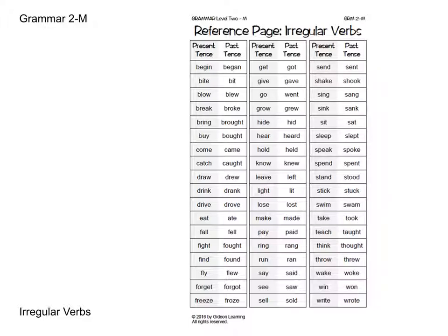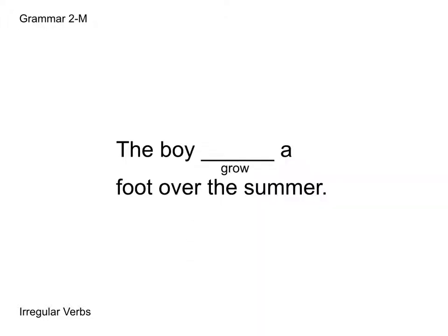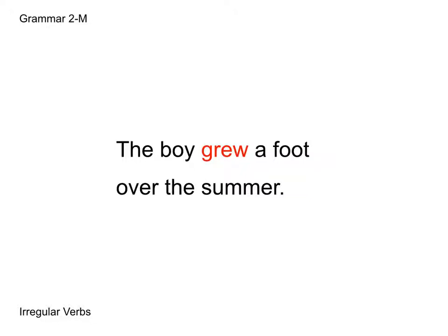Let's look at an example sentence: "The boy blank a foot over the summer." We're going to fill that blank with the past tense of "grow," which is "grew." So the sentence becomes "The boy grew a foot over the summer." Notice this does not follow the same pattern as "write" and "take," so make sure you're checking that reference page in the back.